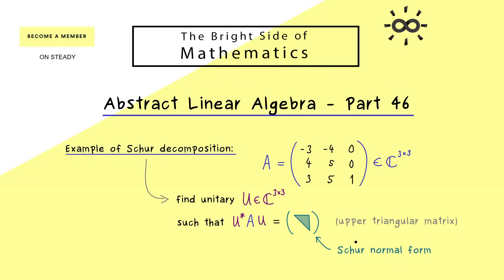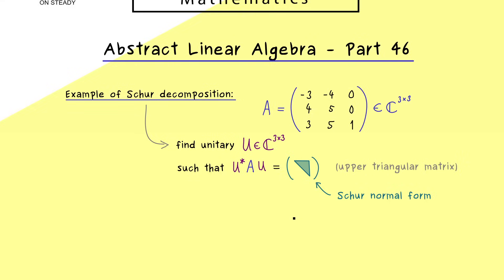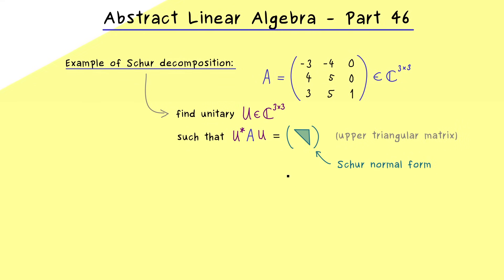What comes out is what we usually call a Schur normal form, which can be different from the Jordan normal form. In the best case scenario we have a diagonal matrix — those are important cases we will discuss in the next video. Here we just start with the algorithm.